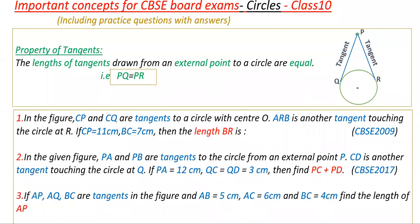Hello everyone. Today I am going to discuss some important concepts for CBSE board exams from the Circles chapter, class 10. We are using the property of tangents for these problems. The property states that the length of tangents drawn from any external point to a circle are equal. If PQ and PR are tangents from external point P, then PQ is equal to PR. We will use this property to solve these problems.